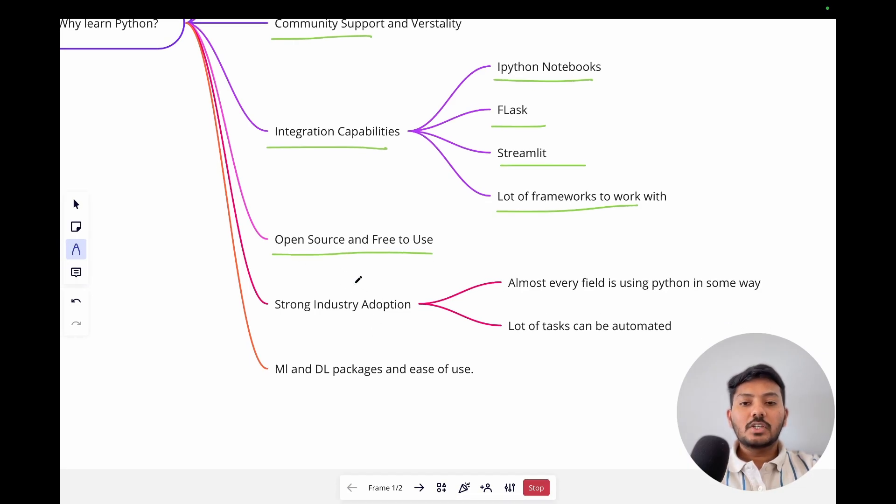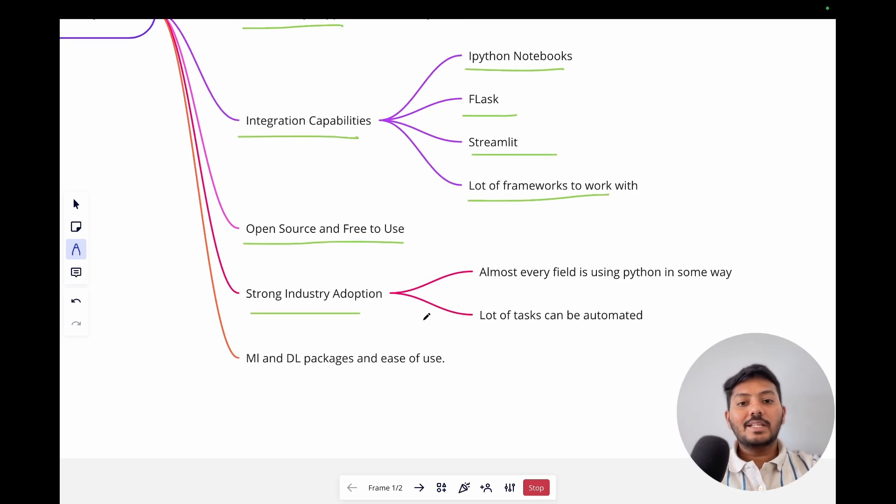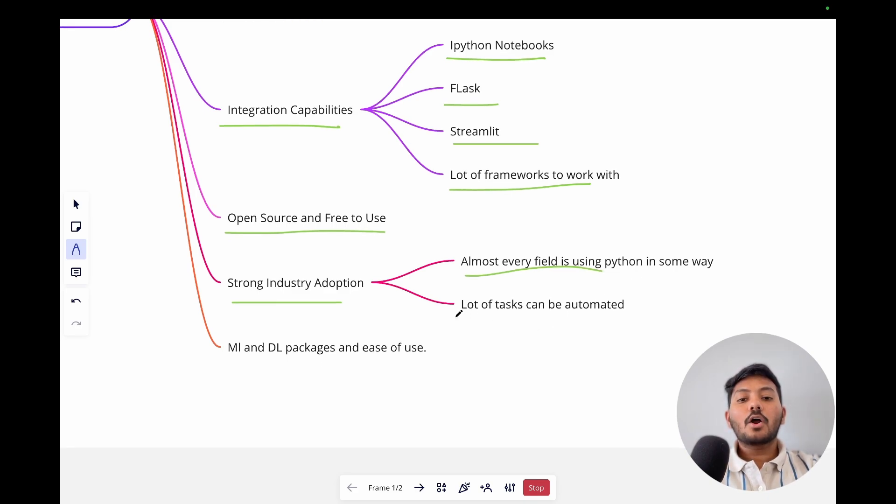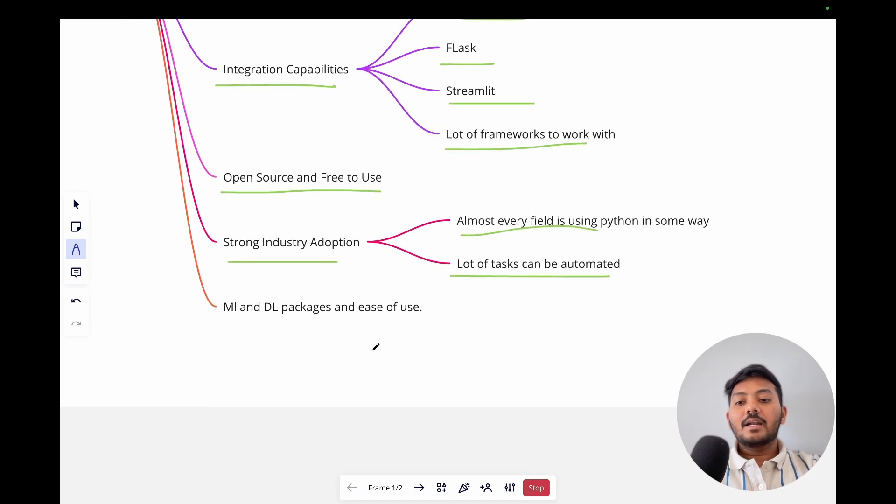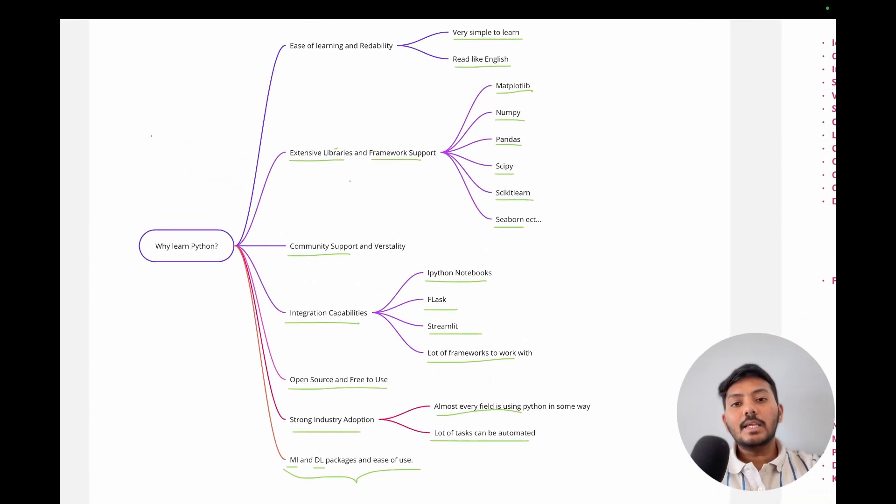Because of this open source and free to use feature, many companies and industries are adopting or switching to Python. Almost every field is using Python in one way or another. You can automate a lot of tasks using Python. A lot of packages are available for assistance in machine learning and deep learning. You don't need to code machine learning logics from scratch. You can use the available libraries. Because of all these functionalities and capabilities, Python is the go-to language for people aspiring to learn machine learning and deep learning.